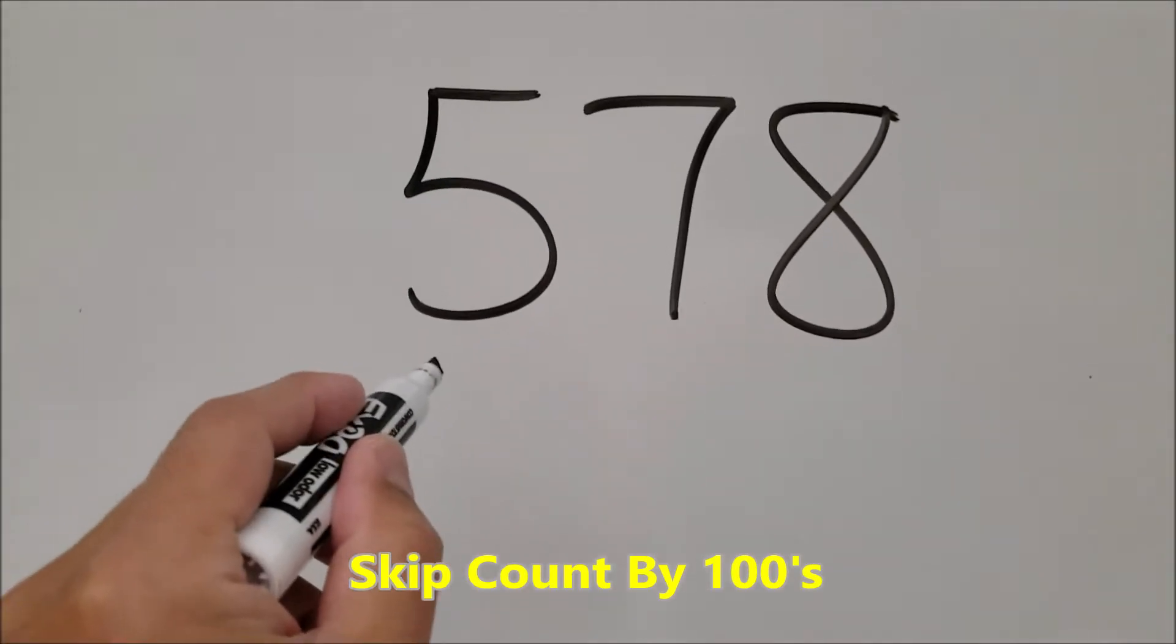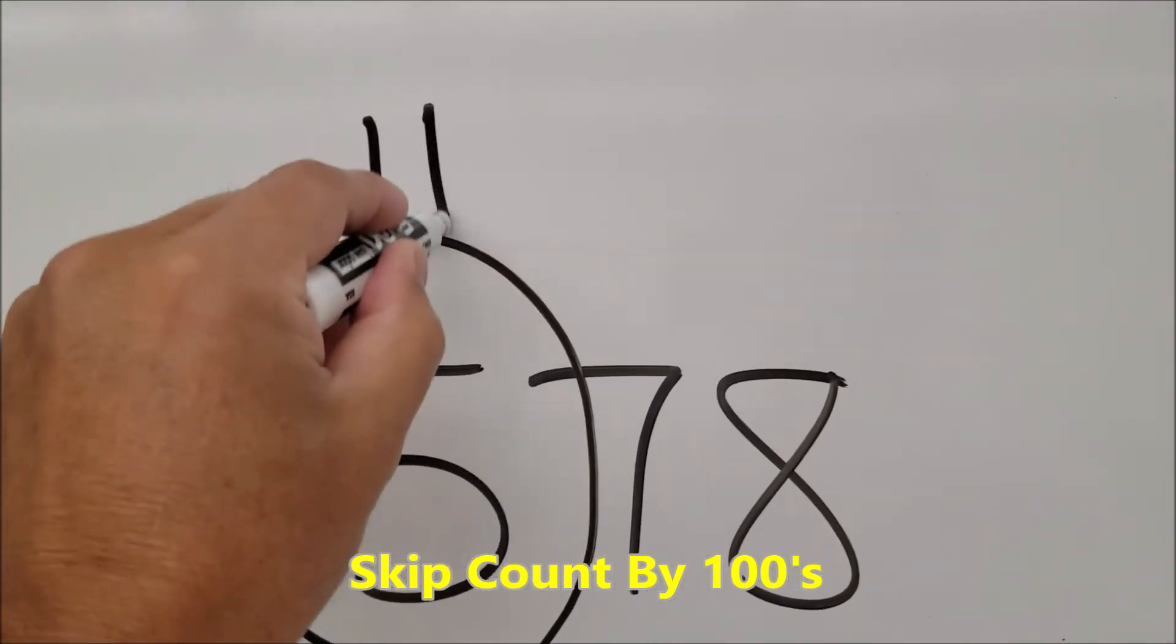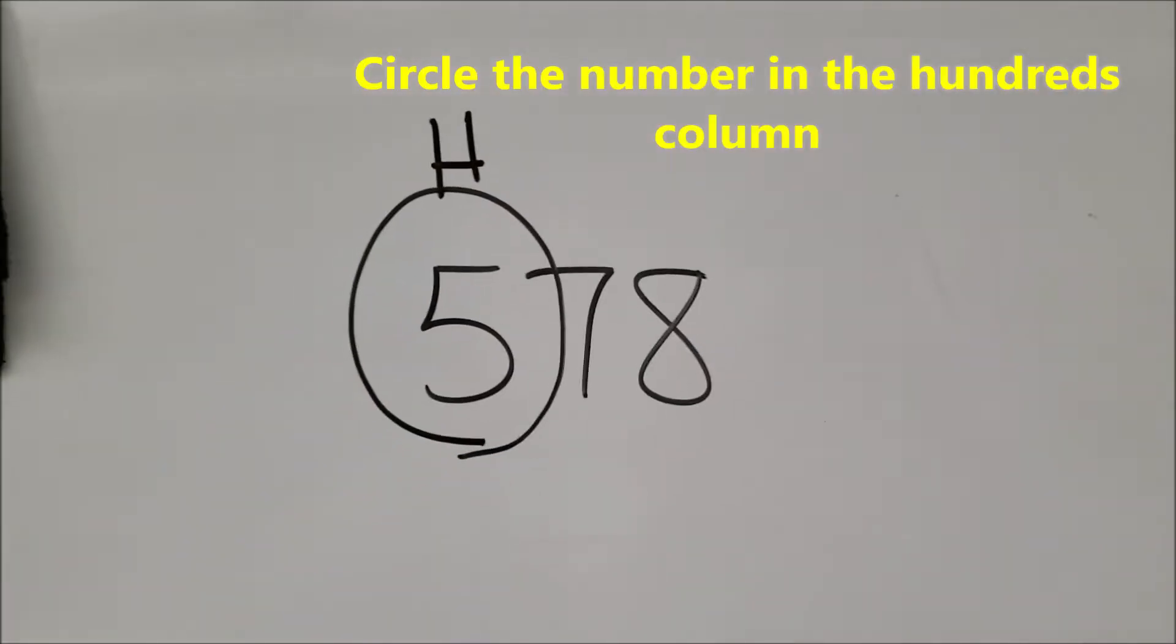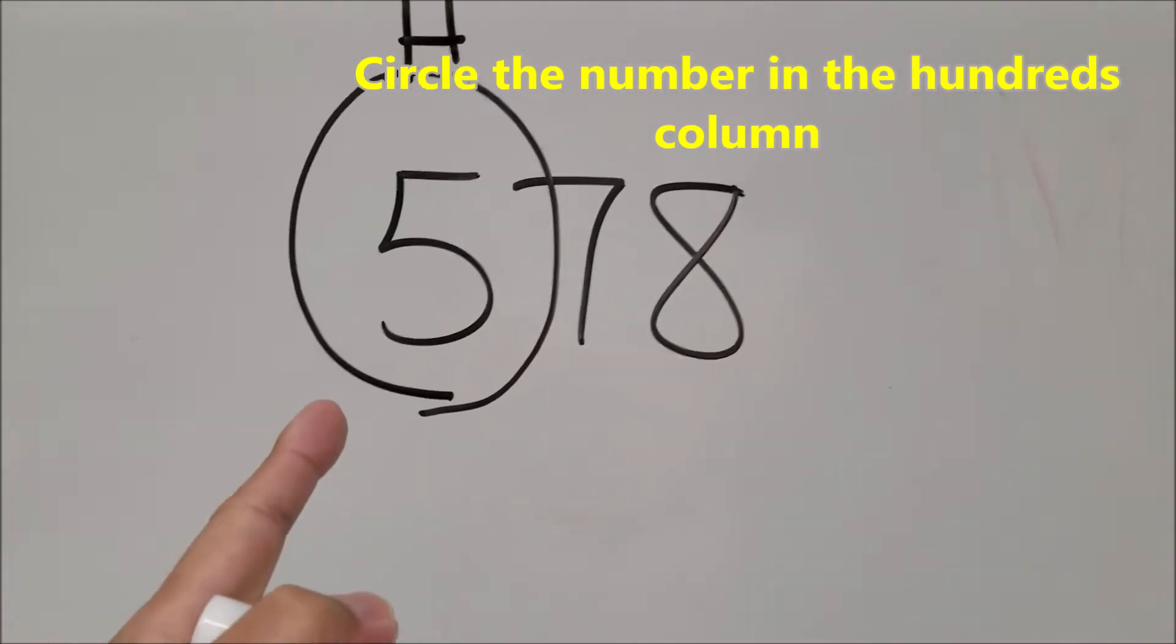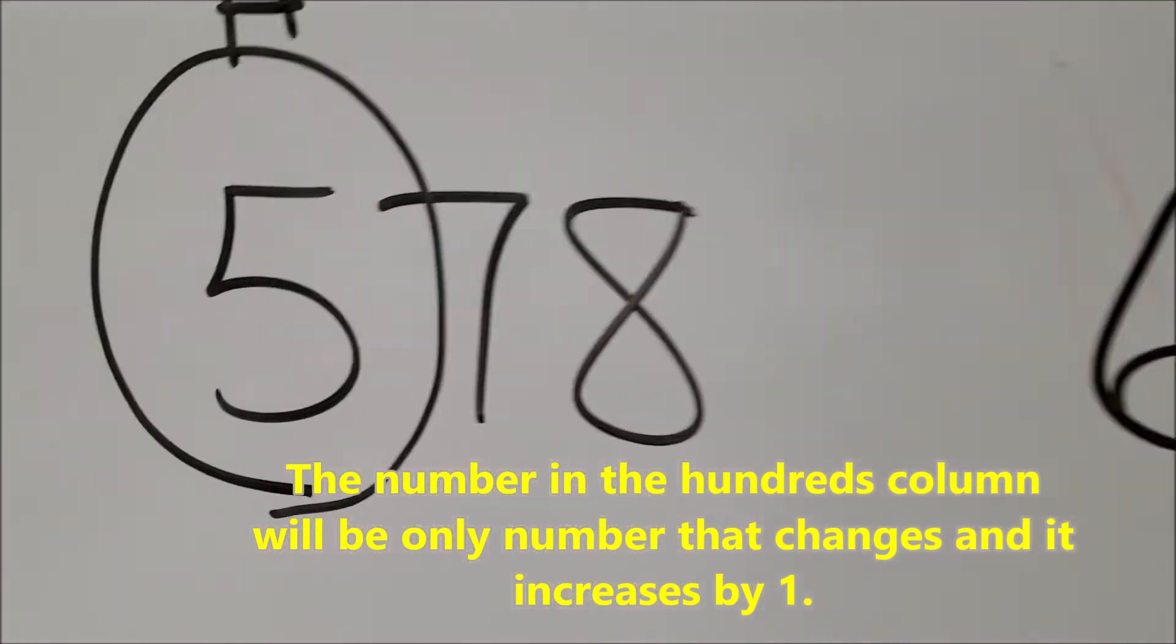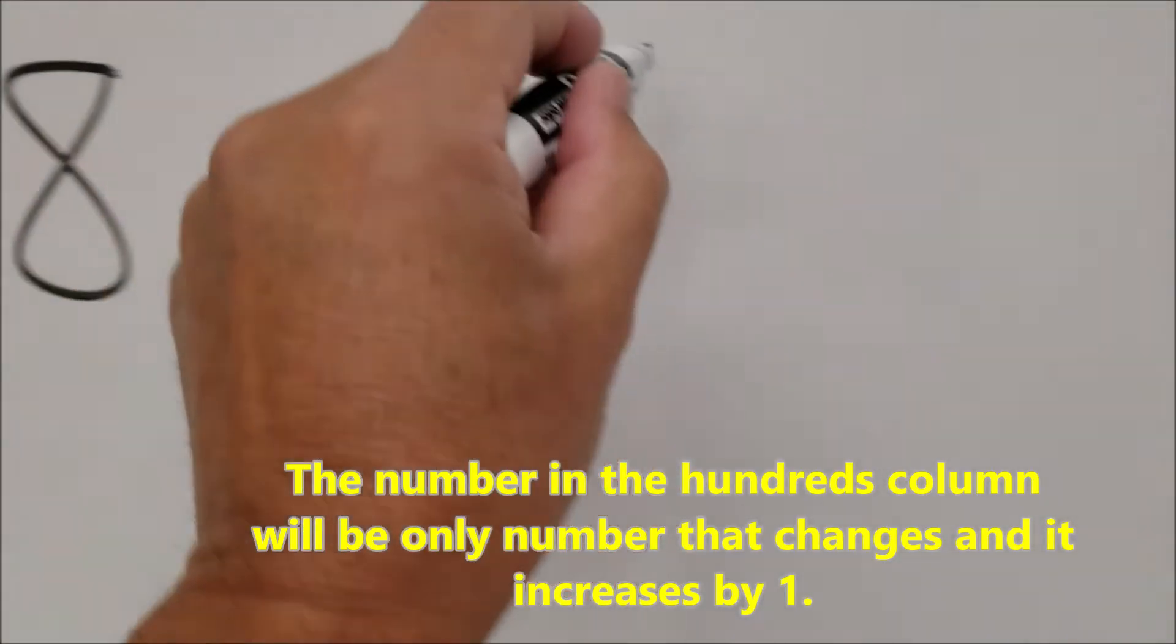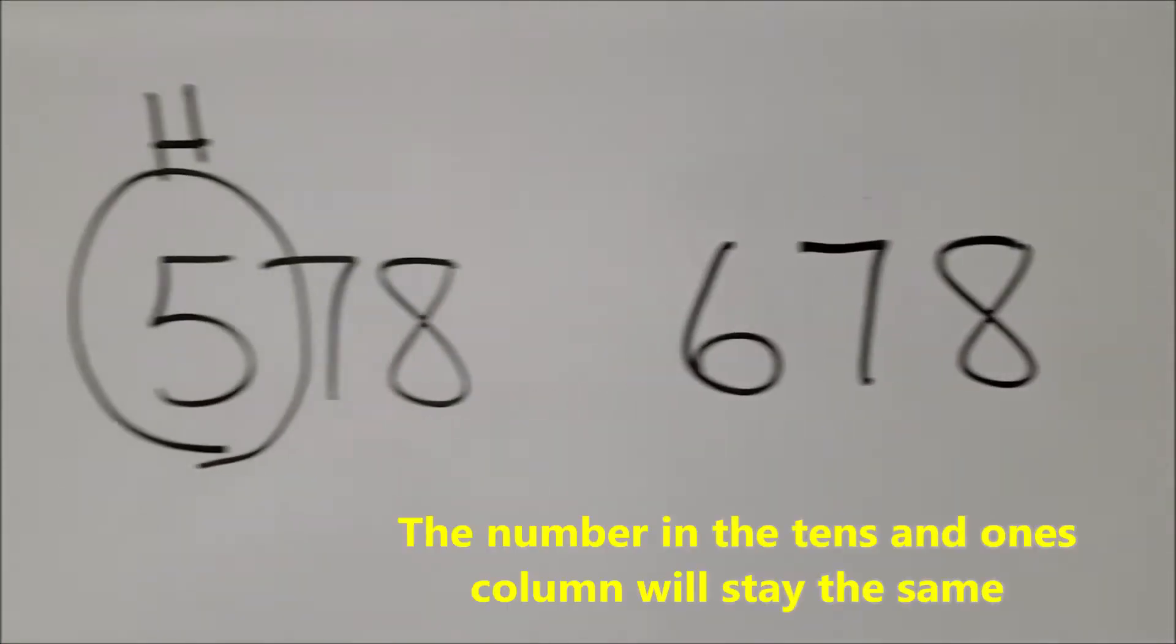So let's say that you were skip counting by 578. Let's say that was our number and we're going to skip count by 100s. I always have my students just circle the number that's in the 100s column and tell them that that's the number that's going to get changed. We're just going to be counting up by 1s. So my students will go, okay, after 5 becomes 6. And I tell them with 100s, everything's going to stay the same. Everything in the 10s and the 1s will stay the same.